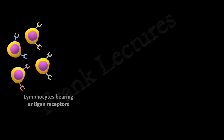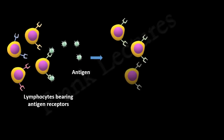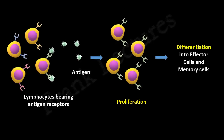At this point of our lecture series, we understand that each of the lymphocytes circulating in our body express unique antigen-specific receptors. When these lymphocytes encounter their specific antigen, they get stimulated and undergo proliferation to produce a clone of that specific lymphocyte. And finally, they differentiate into effector cells and memory cells.